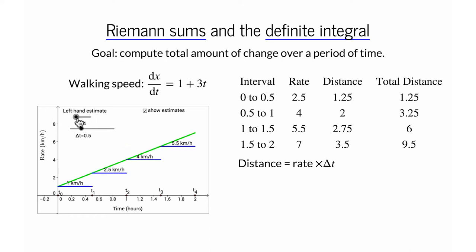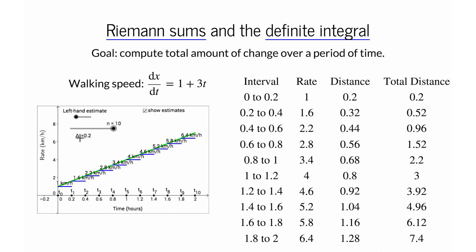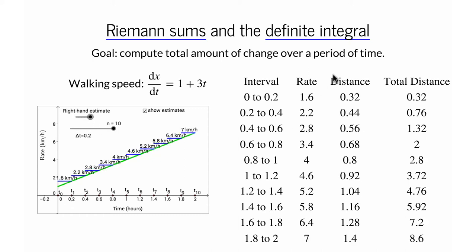Let's refine our estimate further by increasing the number of intervals all the way up to 10, which brings delta t down to 0.2. Now we have 10 different rates, each multiplied by 0.2 and then added up. For the left-handed estimate we get 7.4 kilometers; for the right-handed estimate we get 8.6 kilometers. It seems clear that as we increase the number of intervals, we get a better estimate of your walking distance.